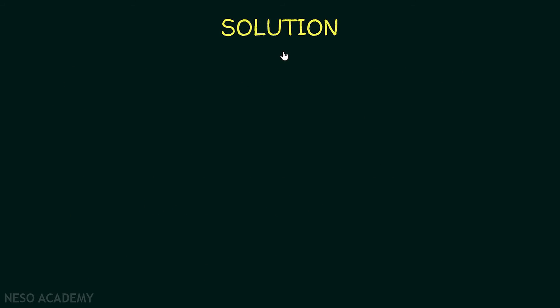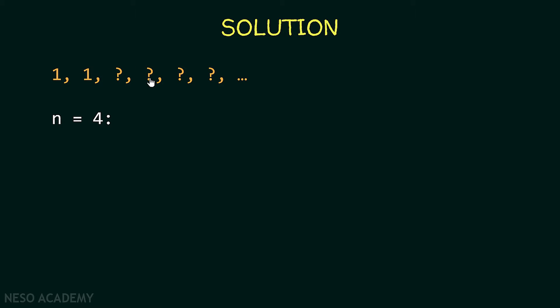Let's have a look at our solution. We are going to store only the first two numbers and calculate the nth Fibonacci number. Suppose the user enters the number 4 — they want the 4th Fibonacci number. To get it, we need the sum of the two numbers before it, so we first add 1 and 1 to get 2.